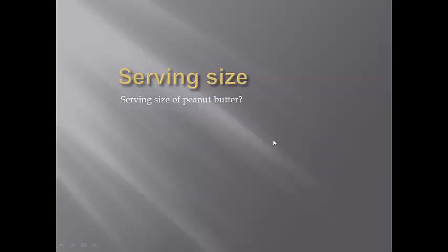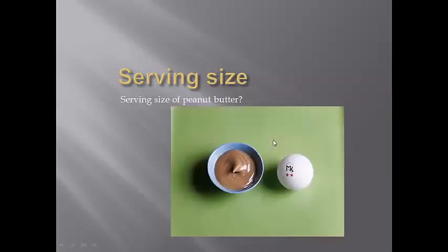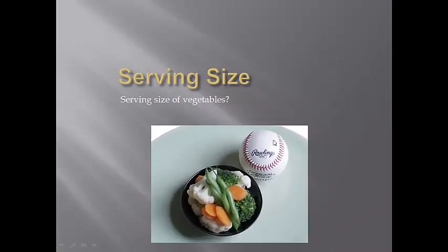Peanut butter serving size is pretty small, and you're going to get a good 120, 150 calories in that. You have to watch your salt content and fat content. Serving size of vegetables is pretty big, the size of a baseball, and the big difference here is that the calorie content is very, very low. It's in the 30 to 40 range as opposed to the 120 and 150 range that we looked at with other types of food.